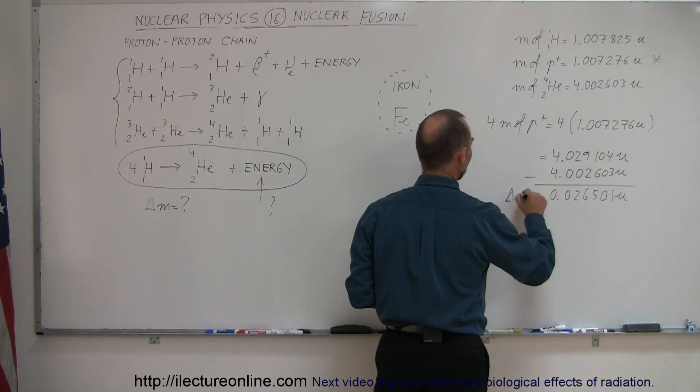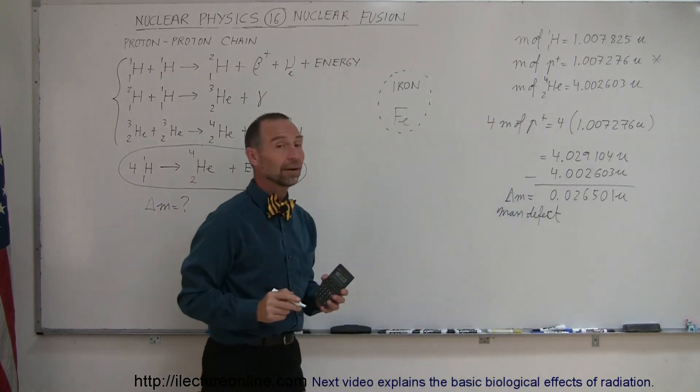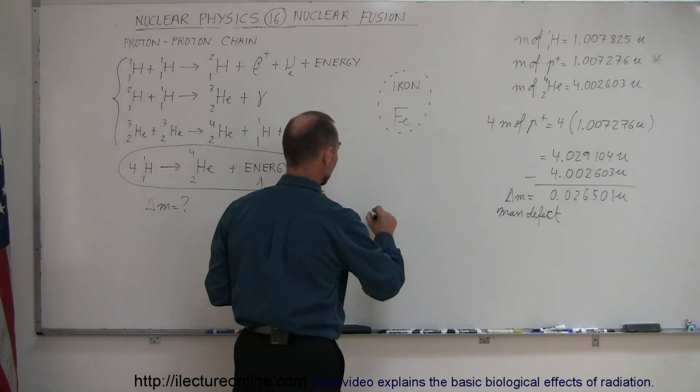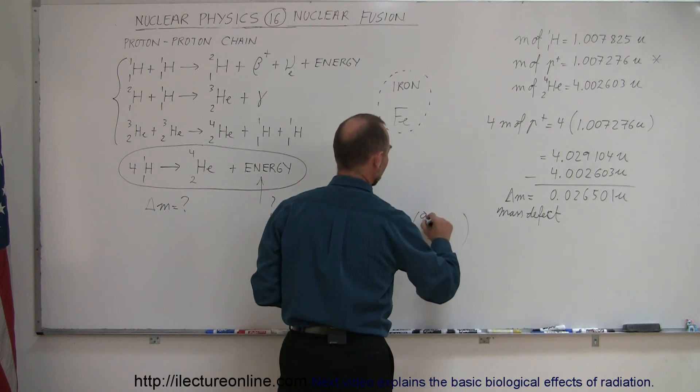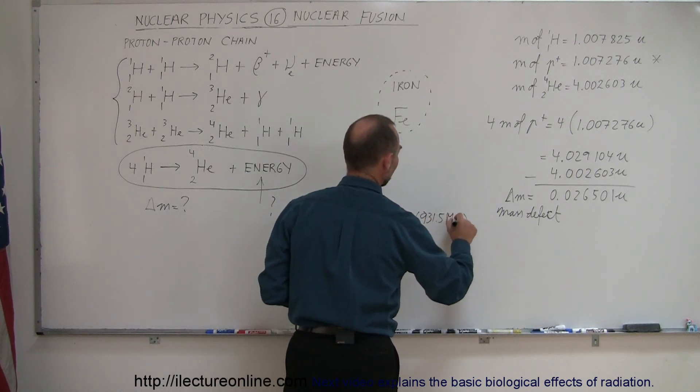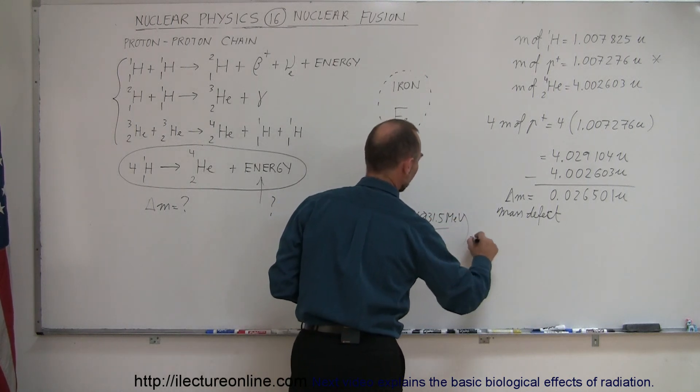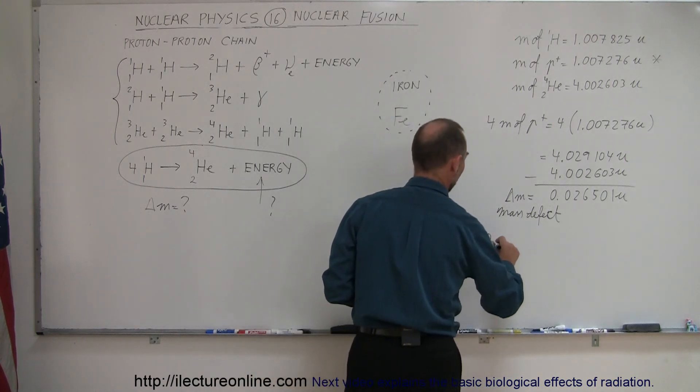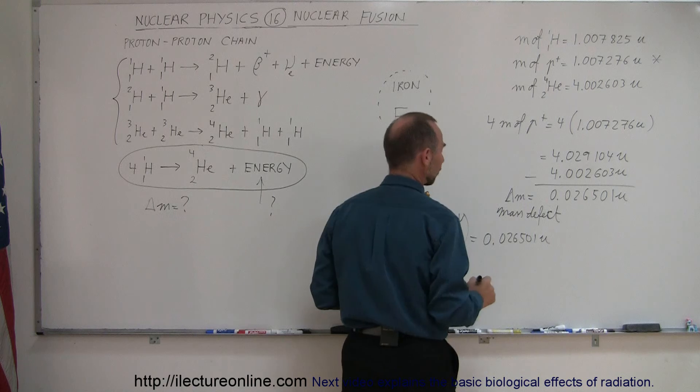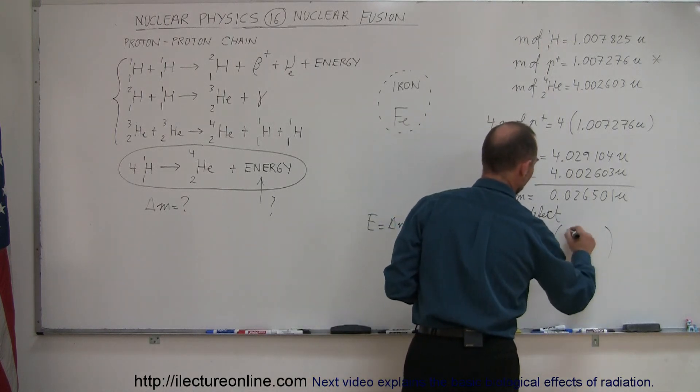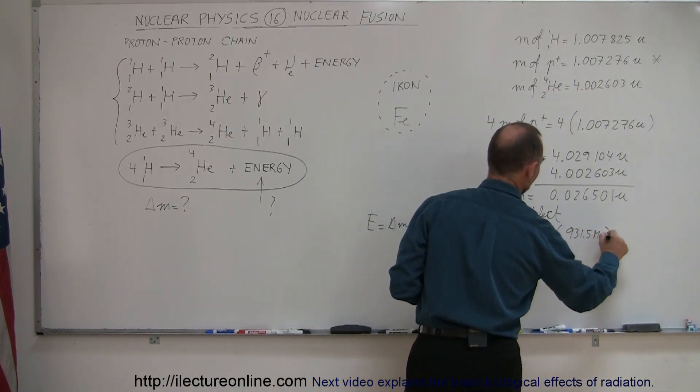Now we can see that the delta M, which is the mass defect, is equal to that quantity right there. Then converting to energy, the energy equivalent is equal to the mass defect times the conversion of 931.5 MeV per atomic mass unit.